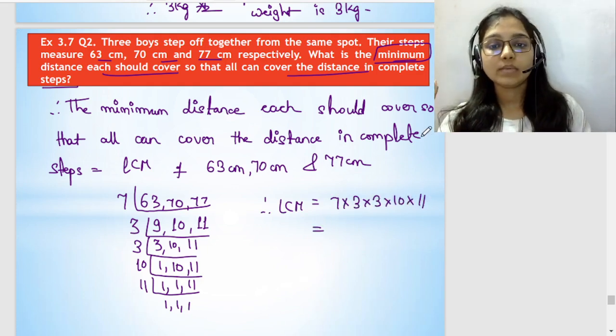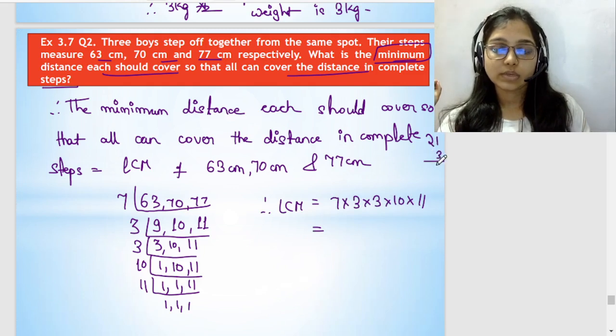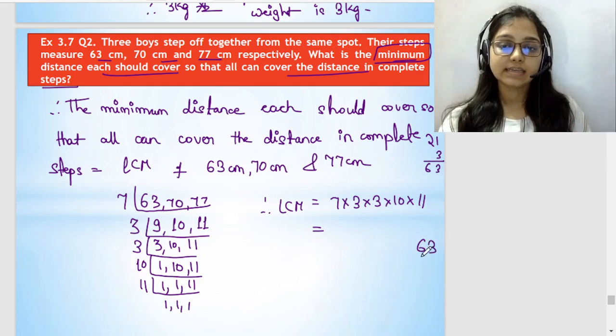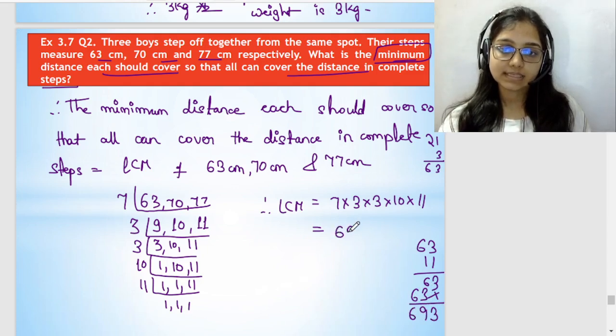So therefore LCM would be 7 times 3 times 3 times 10 times 11. So 7 times 3 is 21, 21 times 3. 3 times 1 is 3, 3 times 2 is 6.